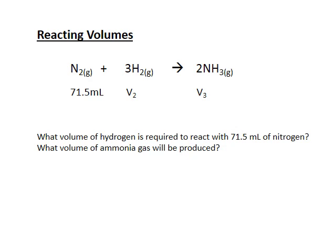So I'm going to tabulate what I know. The nitrogen is 71.5 milliliters. I don't know what V2 is and I don't know what V3 is, but I know that the ratio of these volumes has to be the same as the ratio of the moles that we have in the coefficients. So they're all equal to one another here.